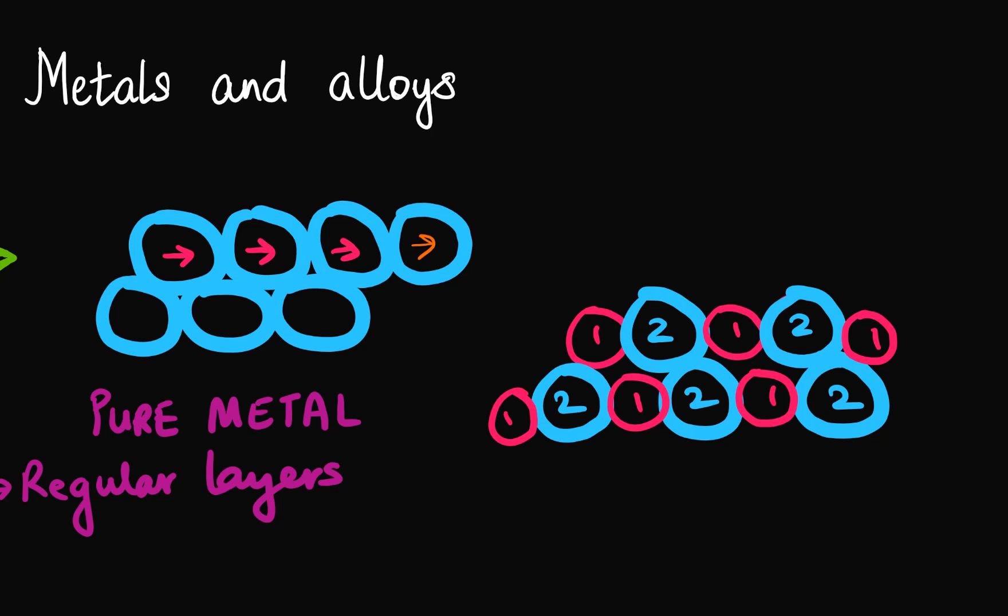Second thing, if I'm going to apply a force at one end what's going to happen is definitely again every atom will try to shift to the right in this case. But because they are of different sizes, what's going to happen is that the layers will not be able to slide past over each other easily as before, as in the case of the pure metal.